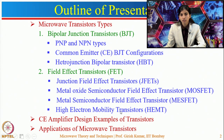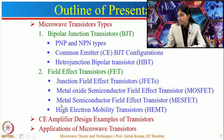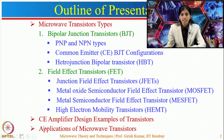The high electron mobility transistor (HEMT) is introduced because other transistors do not provide desirable characteristics at higher frequencies due to internal capacitance. HEMTs are heterostructures that can operate up to very high frequencies and provide better performance. After discussing these transistors, we will take an example of a common emitter amplifier design to see how various parameters affect performance, and then discuss applications of microwave transistors.